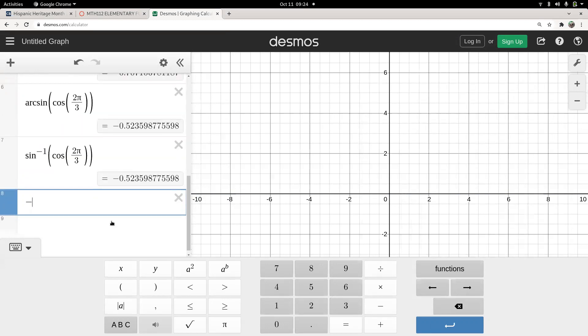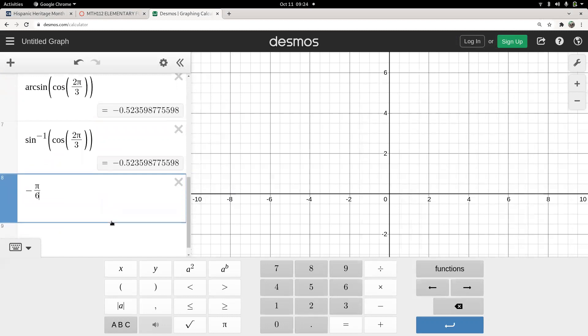and then I think that number should be negative π over 6, so let's check if that's true. Negative π over 6, and I get the same decimal evaluation.